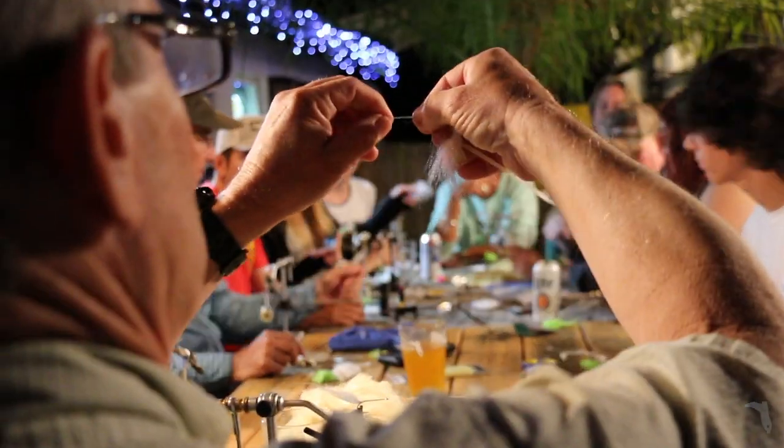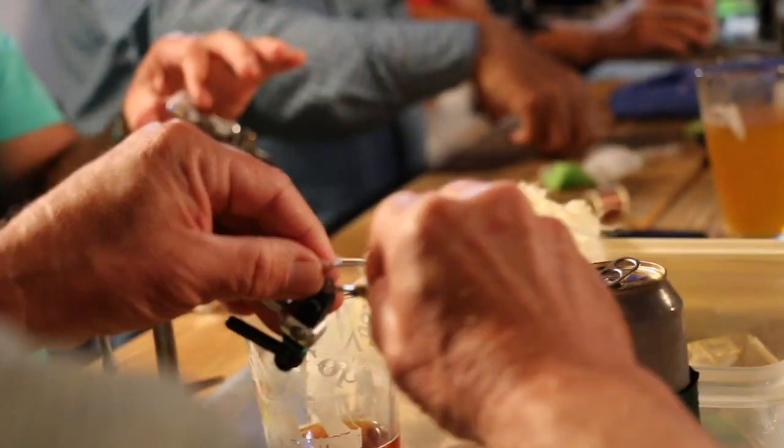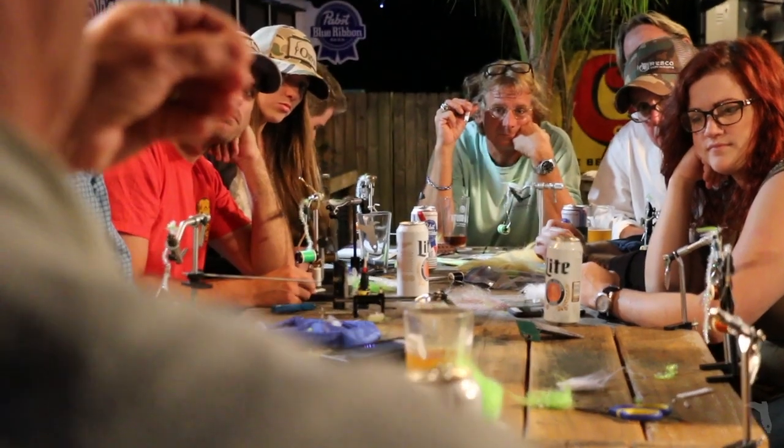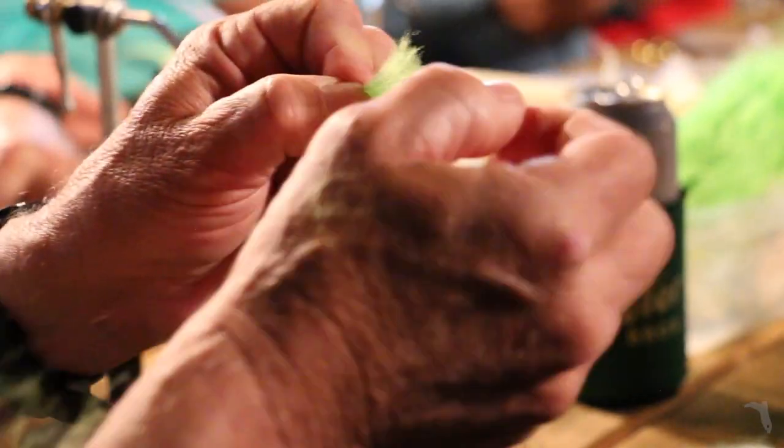Then I usually put in a small piece, just five or six strands of crystal flash or some other type of flash material. Then I put a darker color on the back.